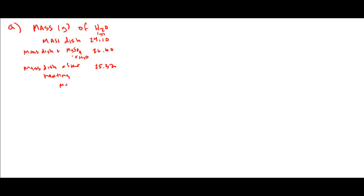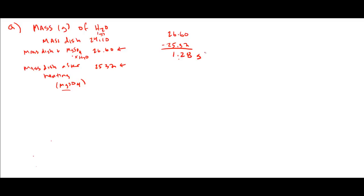After heating, the dish contains our MgSO4 without the water — after driving off the water. So the question is: calculate in grams the water evaporated from the sample. We have the mass of the hydrate and the mass of the dehydrated compound. If we subtract those, 26.60 minus 25.32, we get 1.28 grams of water evaporated.